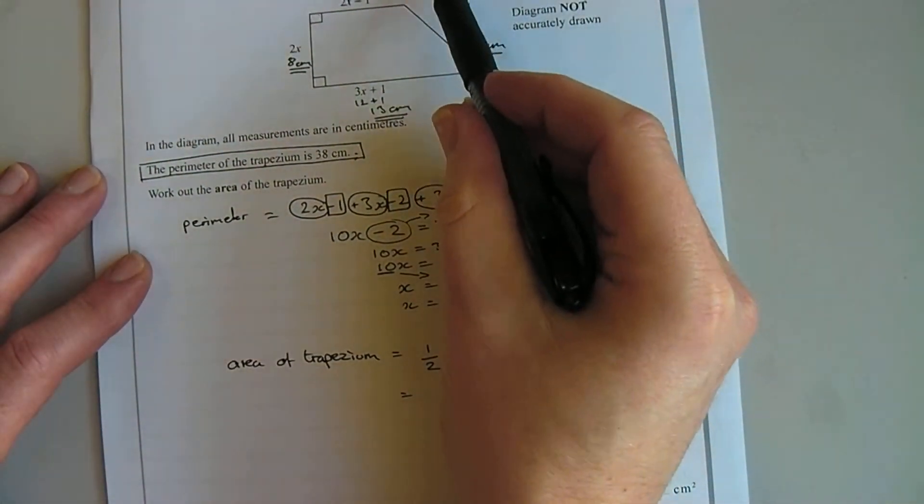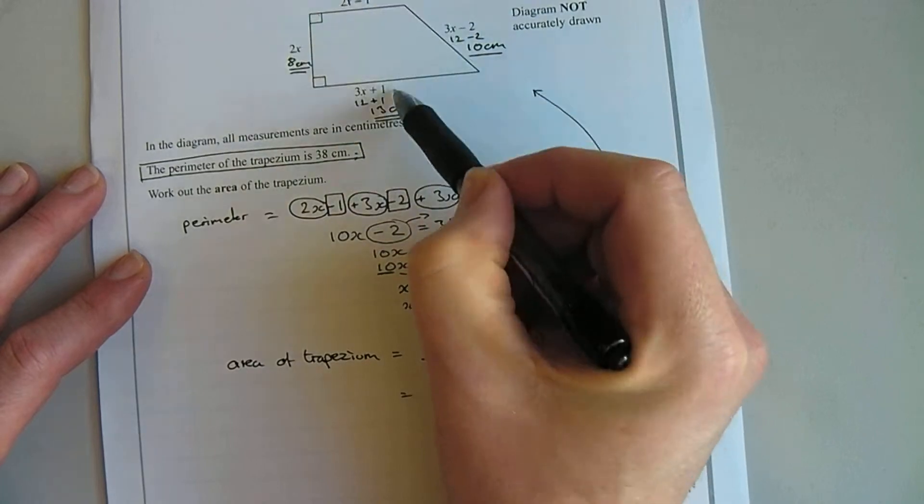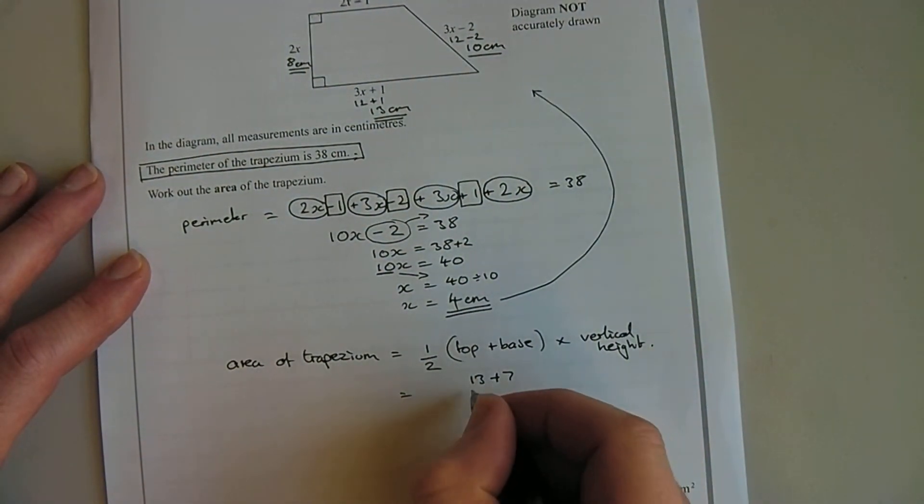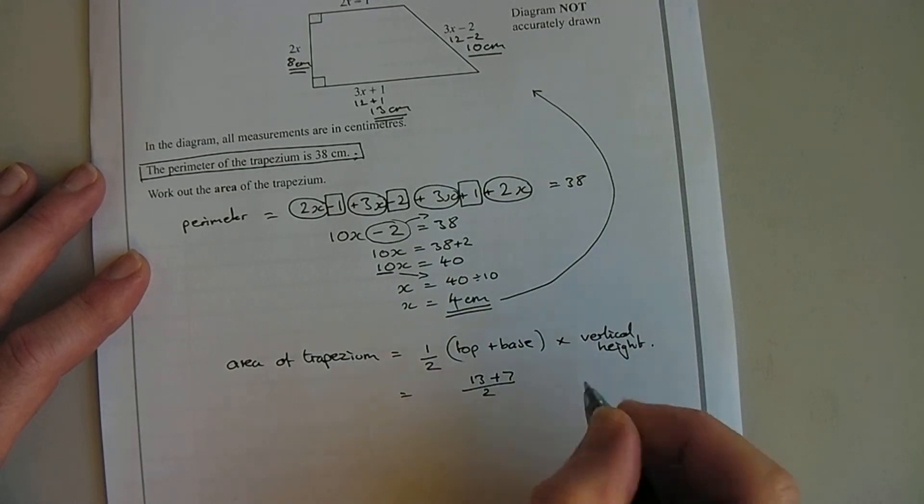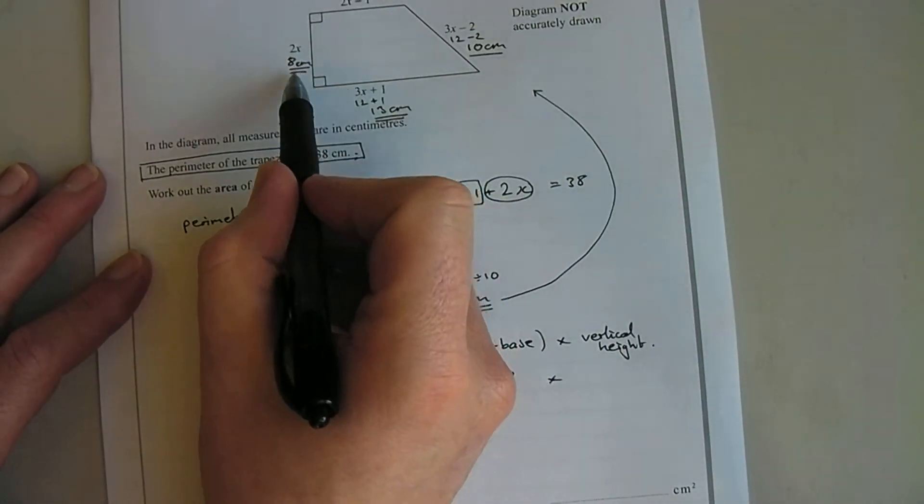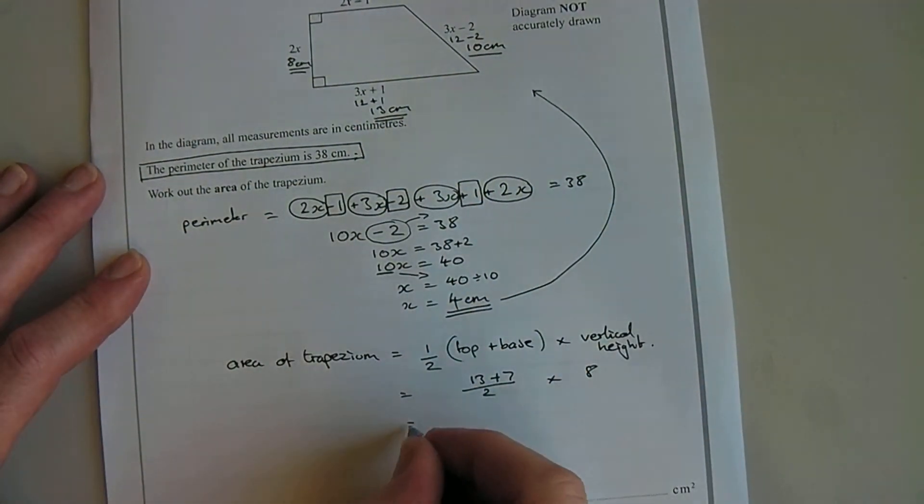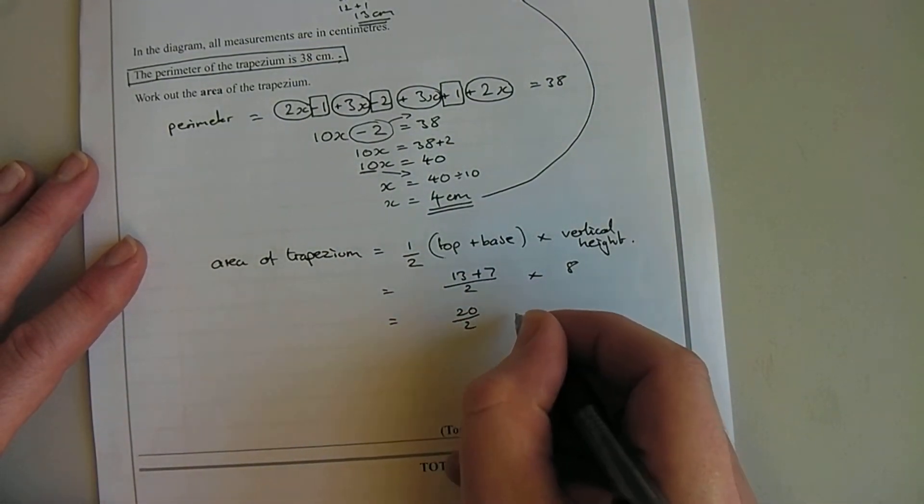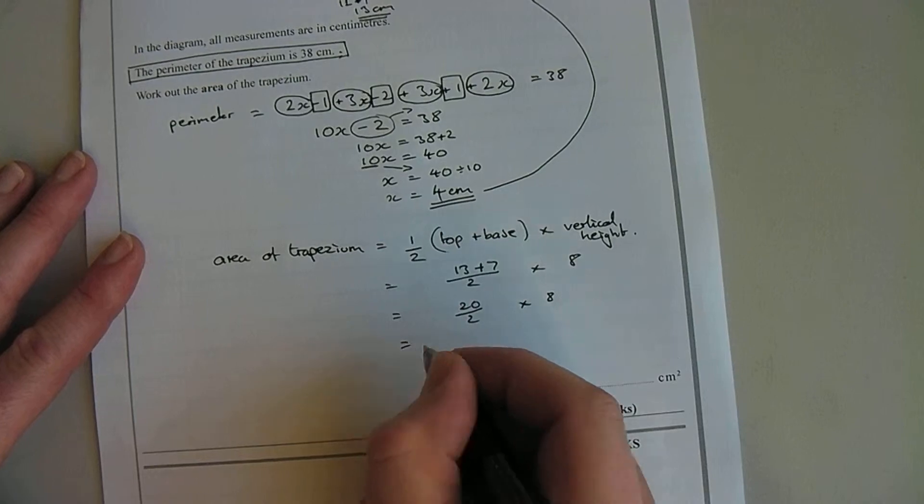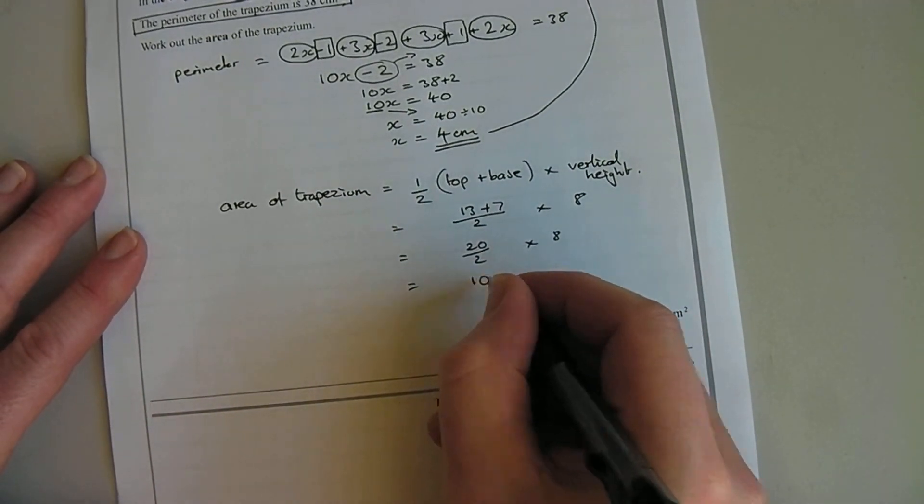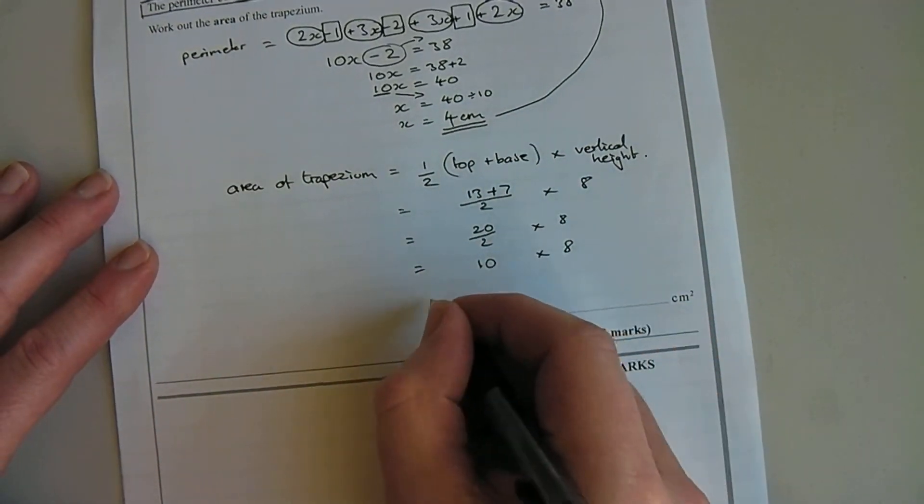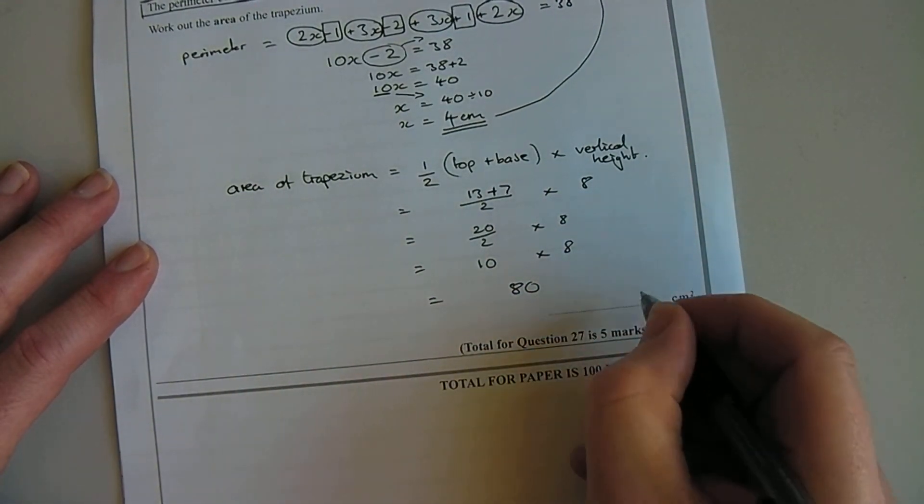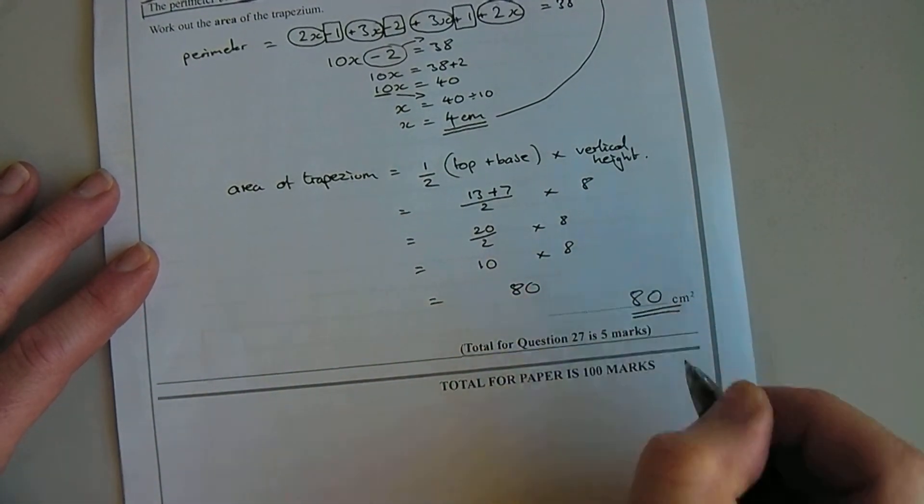Okay, so the base plus the top is 13 add 7, and I want half of that times by the vertical height which is 8. So 13 add 7 is 20 divided by 2 times 8. 20 divided by 2 is 10 times 8. 10 times 8 is 80, so the answer is 80 centimeters squared.